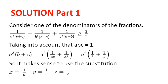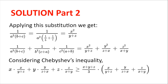Solution. Consider one of the denominators of the fractions. Taking into account that abc is equal to 1, a cubed multiplied by (b plus c) can be rewritten as a cubed multiplied by (1 divided by ac plus 1 divided by ab), which is the same as a squared multiplied by (1 over b plus 1 over c). So it makes sense to use the substitution x equal to 1 over a, y equal to 1 over b, and z equal to 1 over c. Applying the substitution, 1 divided by a cubed multiplied by (b plus c) can be rewritten as x squared divided by (y plus z).